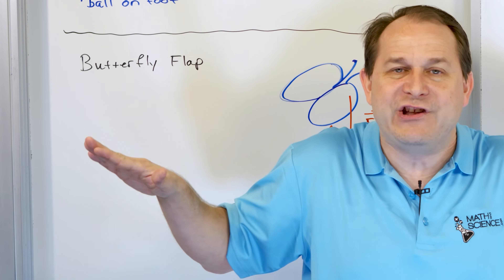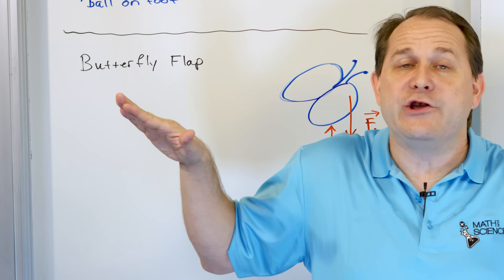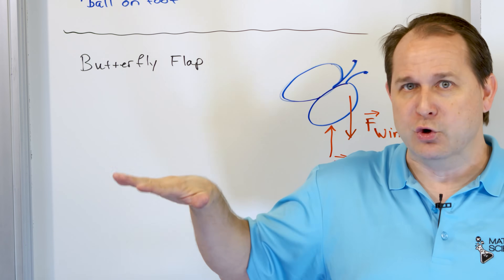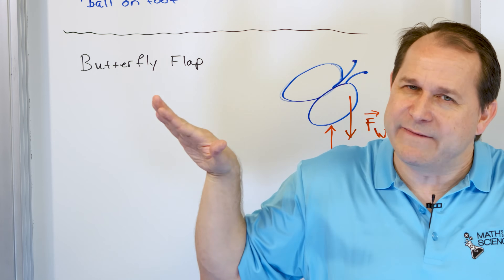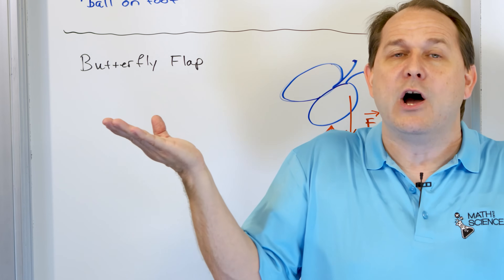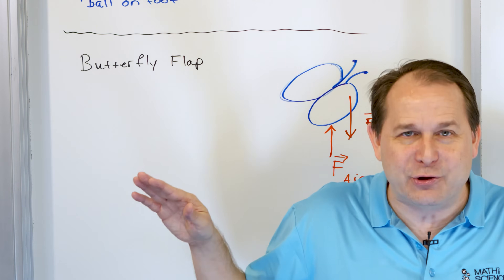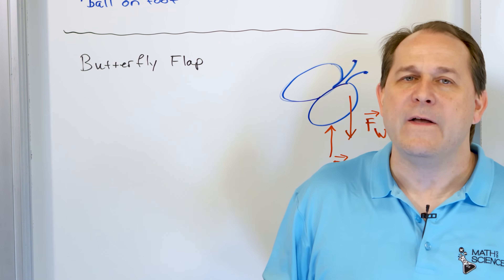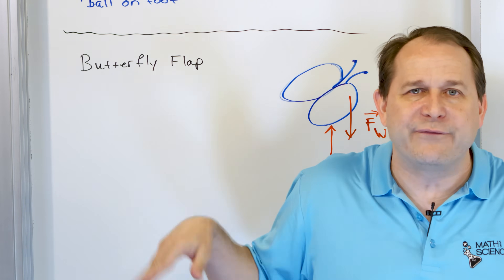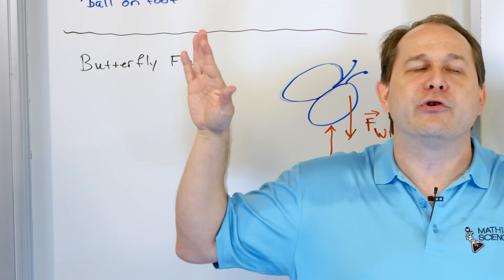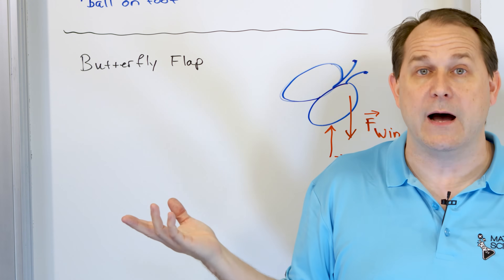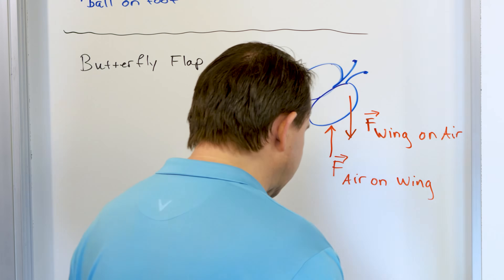When you push down, you impart a force on the air - that force moves the air down. But at the moment of that force happening, there is a reaction force where the air is pushing up on your wing. That is how you maintain your altitude. Without the reaction force actually acting on your wing, flapping wouldn't do anything. So you're simultaneously pushing the air down while the air is pushing your wings up.